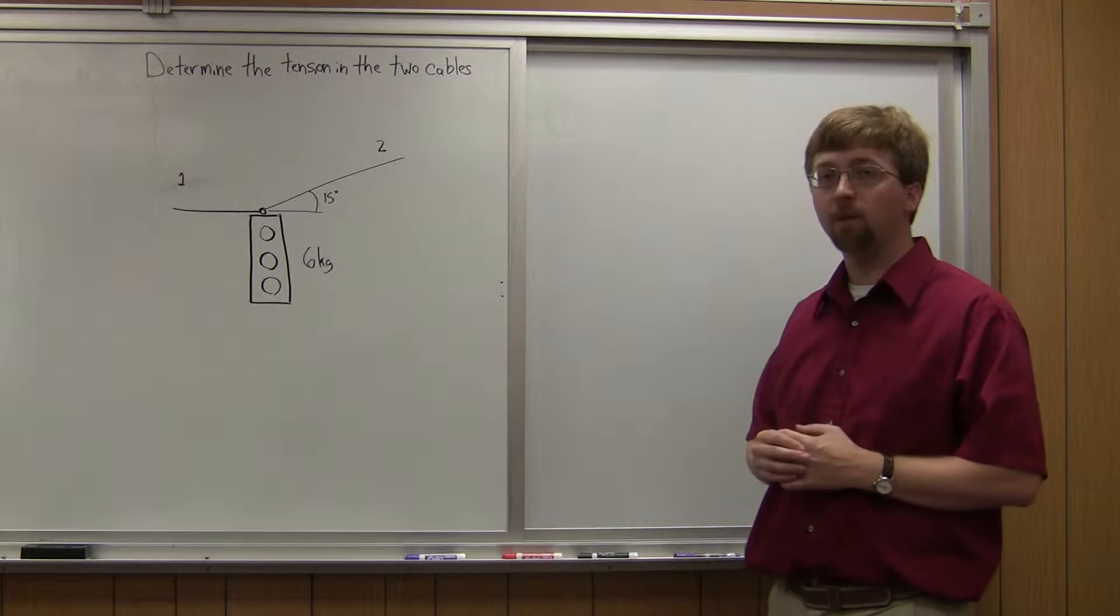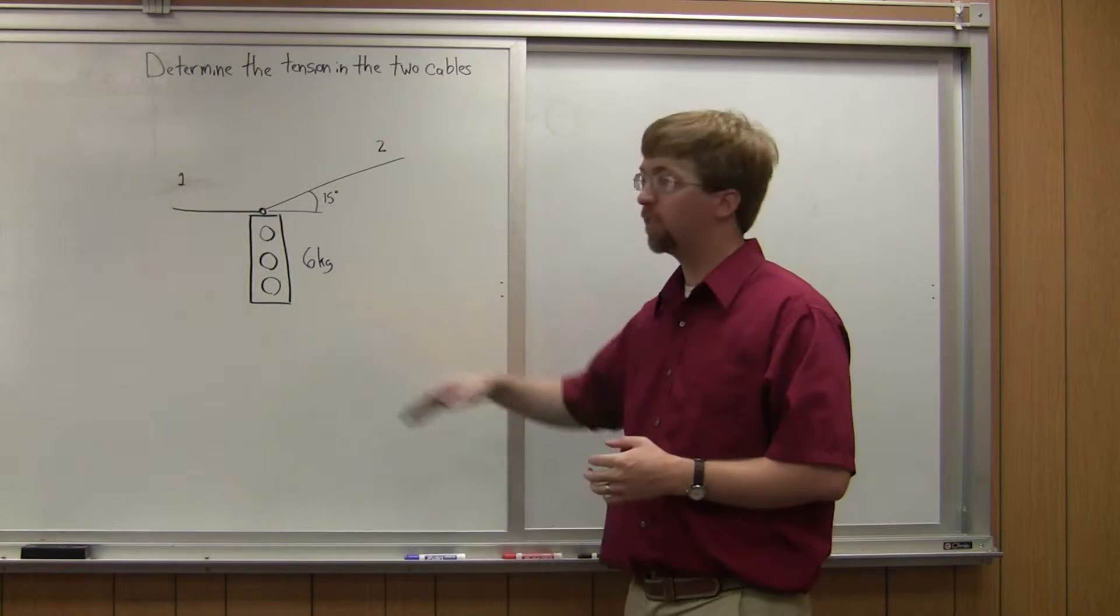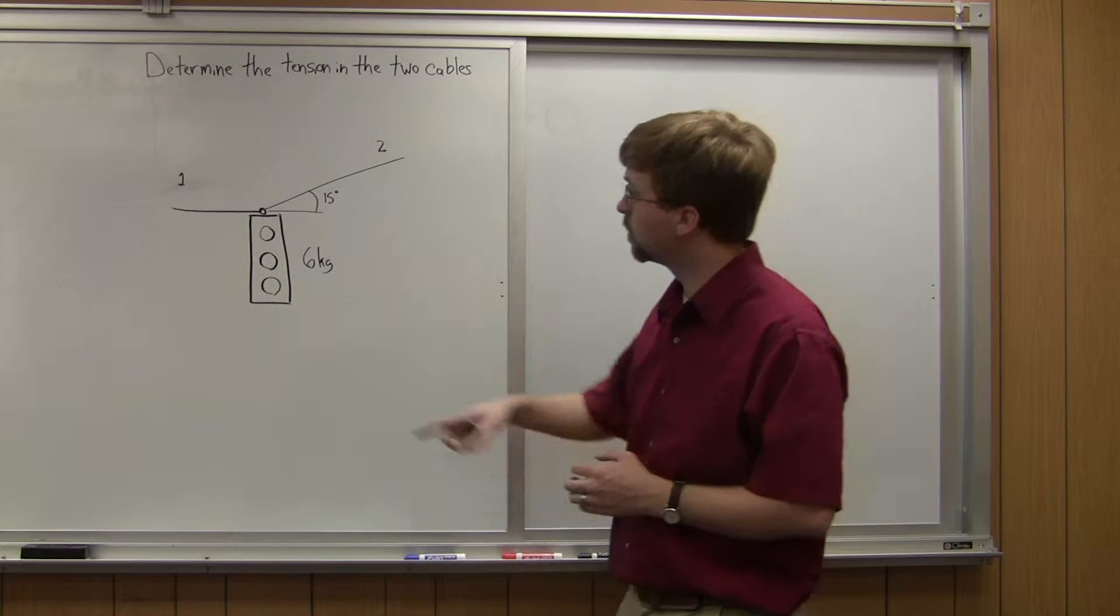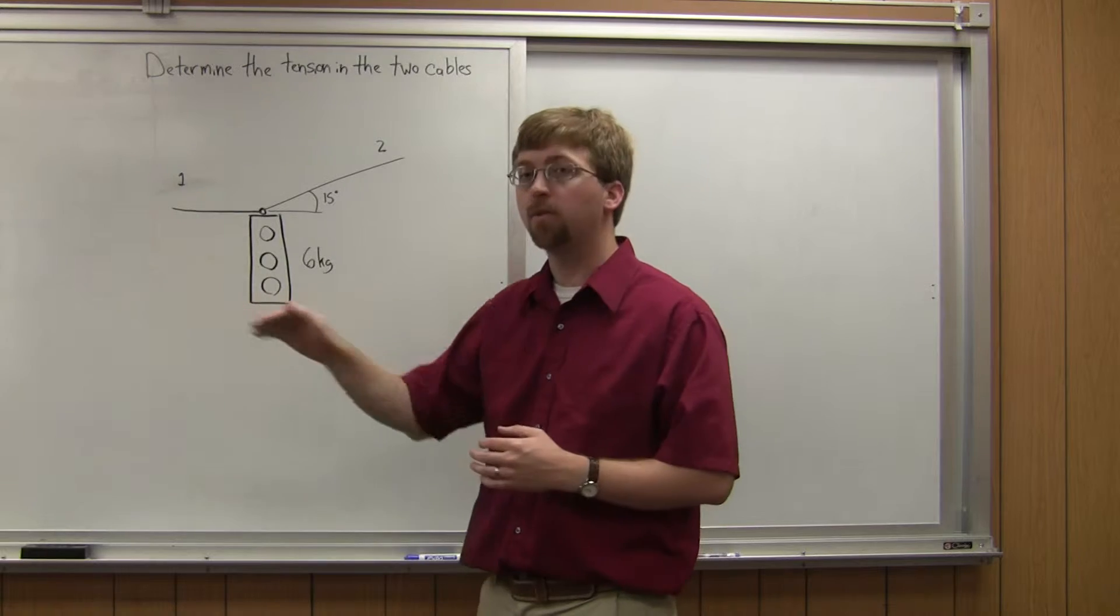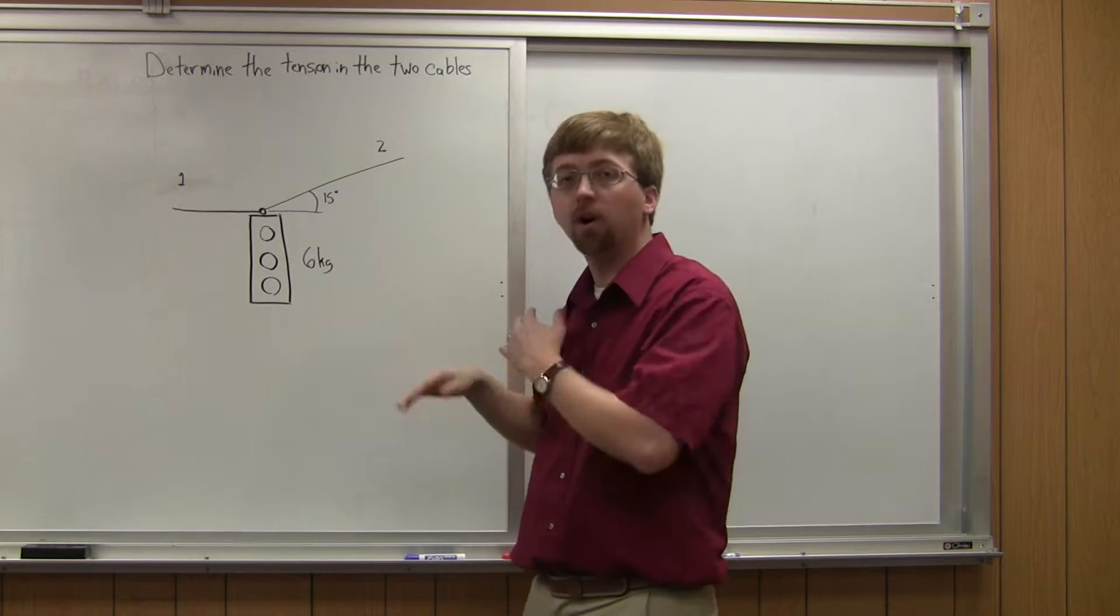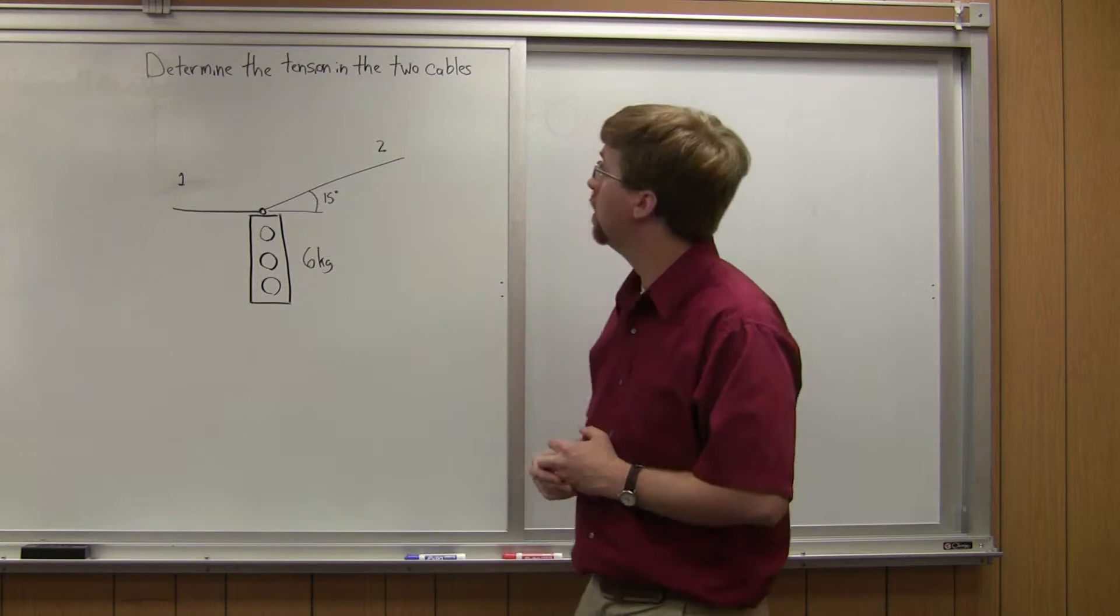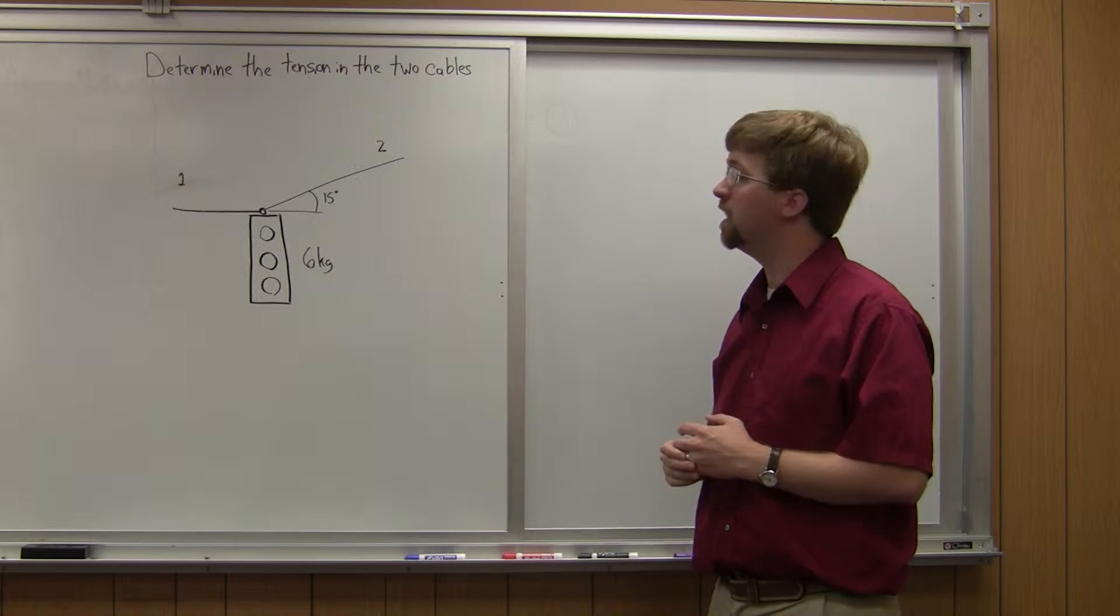So with this problem we've got a traffic light. It's got a mass of six kilograms being supported by two cables. Cable 1 on the left here is going to be going off horizontally and cable 2 is going off at a 15 degree angle. And we're asked to determine the tension in these two cables.